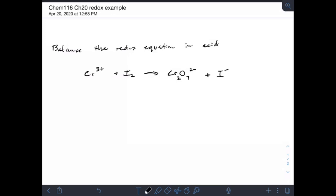Step 1 in that process is assign oxidation states to everything in the problem. So we have a plus 3 for the chromium, we have a 0 for the iodine because that's its natural state. We have a plus 6 for the chromium in this chromate ion. Each oxygen is a minus 2 and iodine is a minus 1. So we see that chromium is going from a plus 3 to a plus 6 and we see that iodine is going from a 0 to a minus 1. Those are our half reactions.